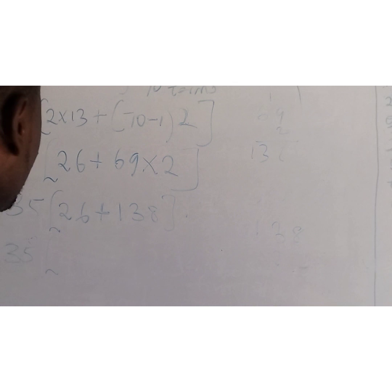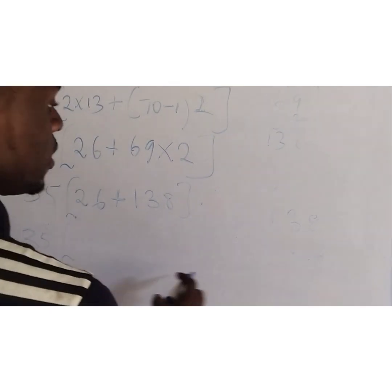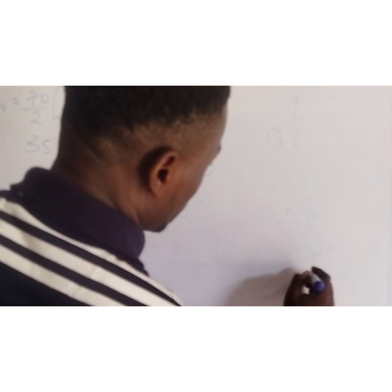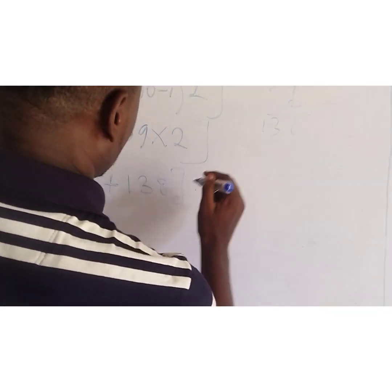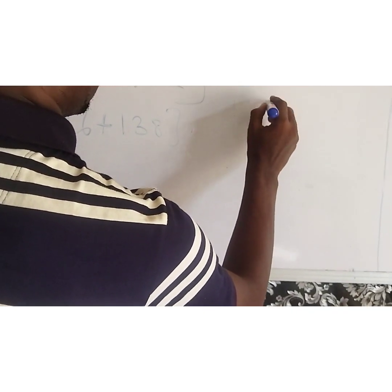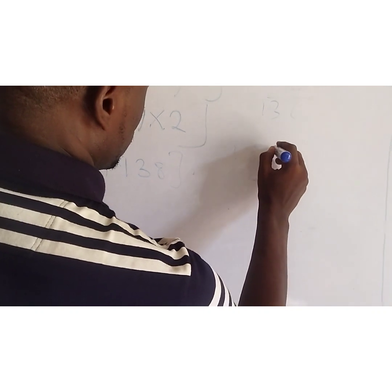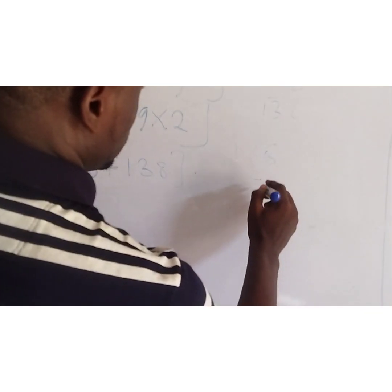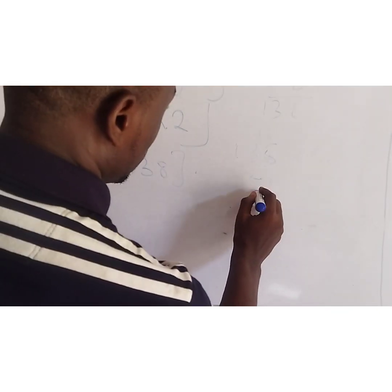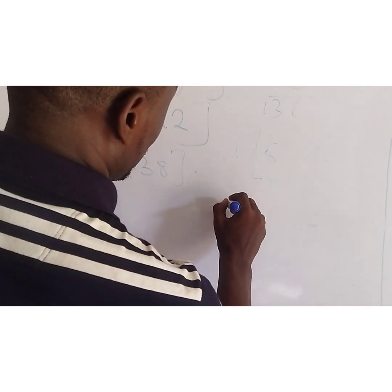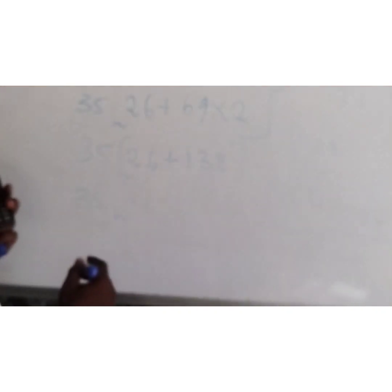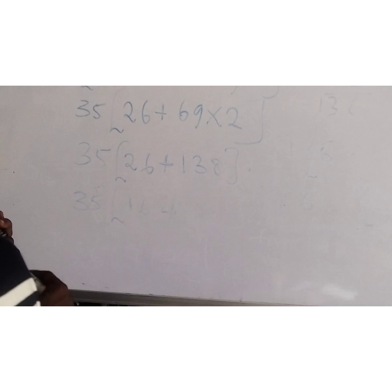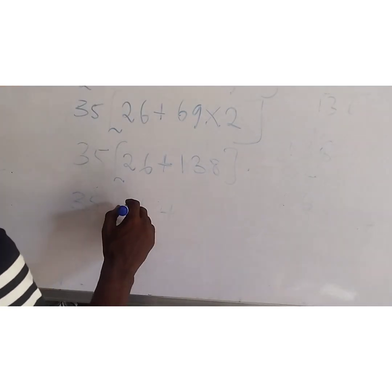Let me use my calculator because we are going to add it. We have 26, 8 plus 6 is 14, carry 1. That's 164. So we have 164.